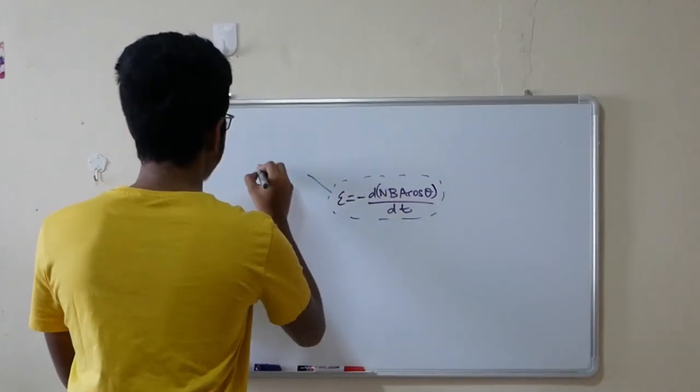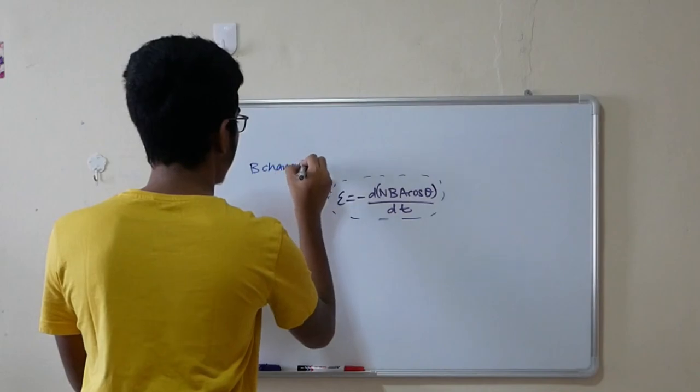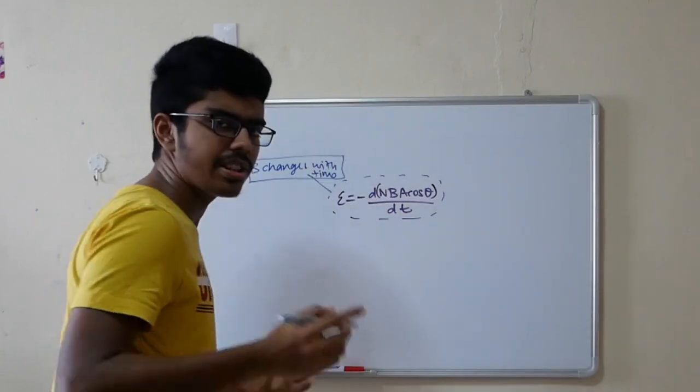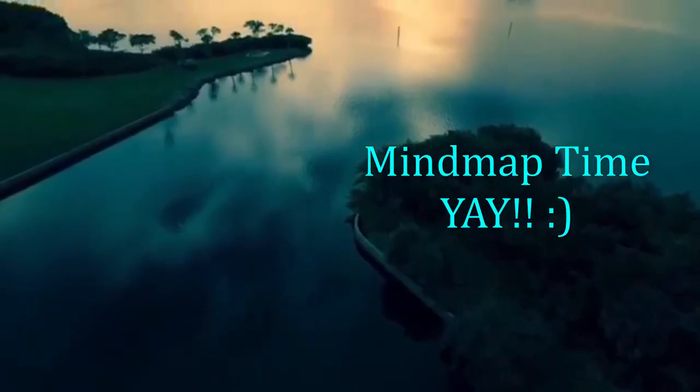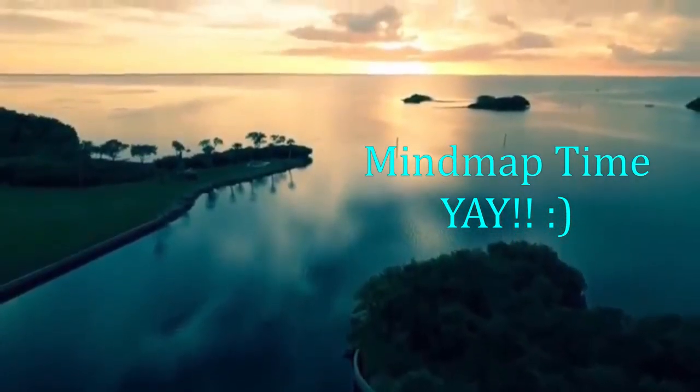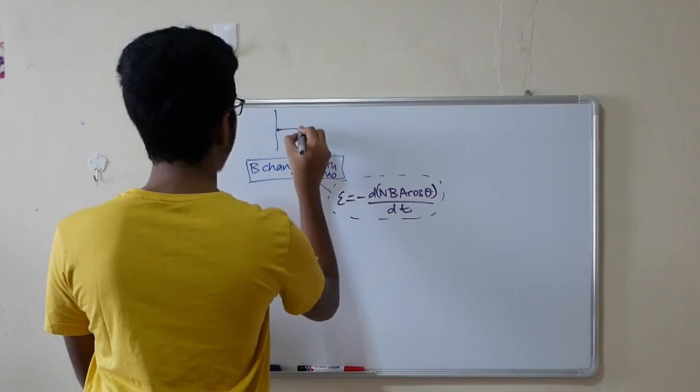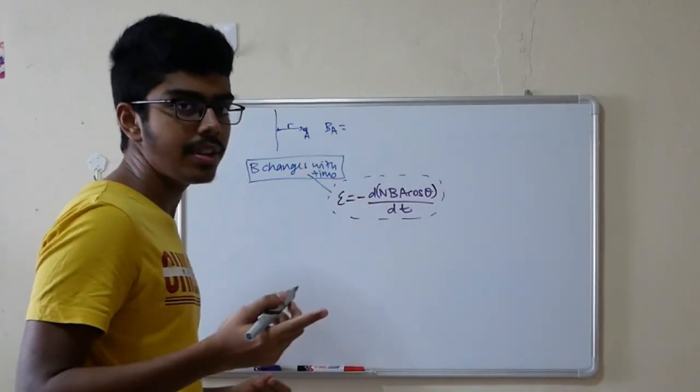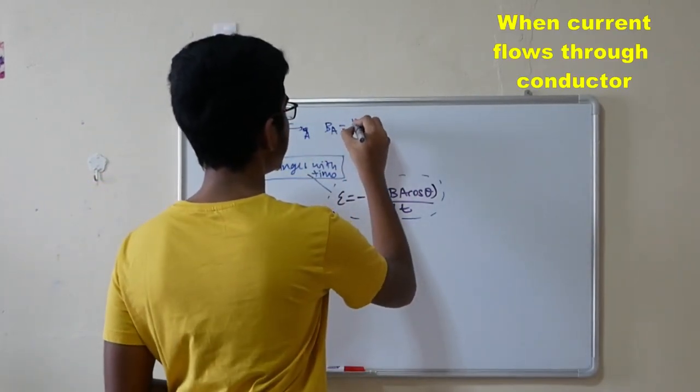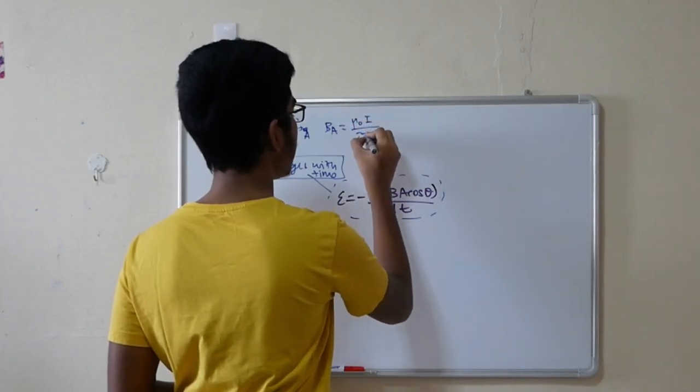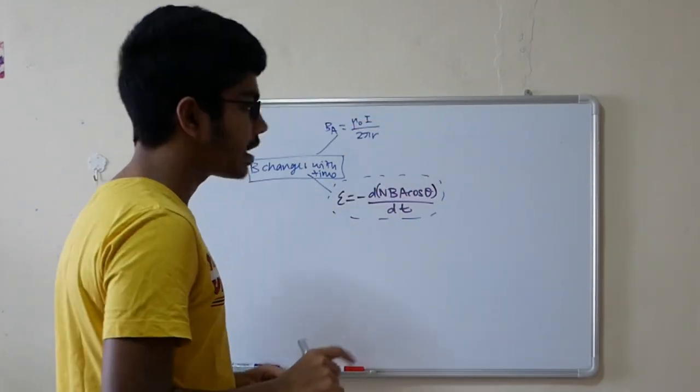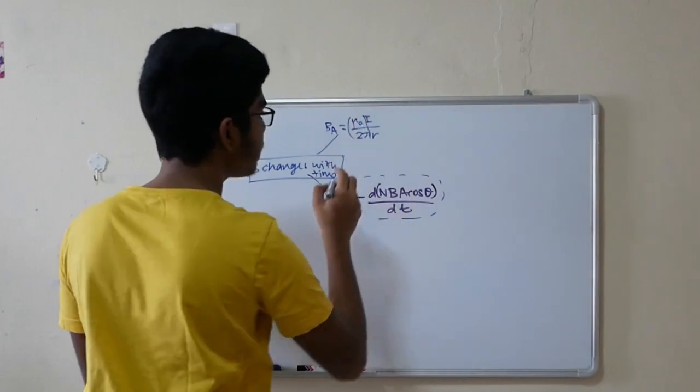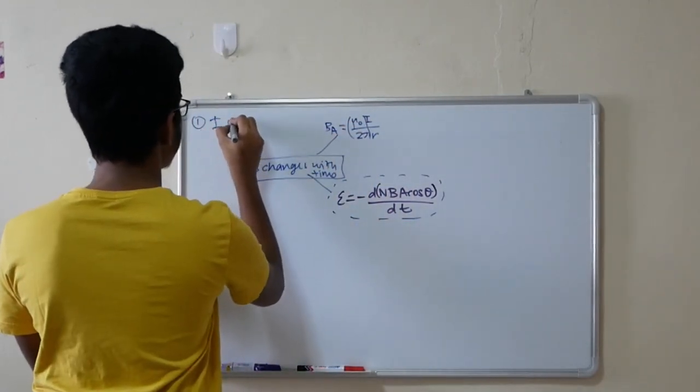Now I'm bringing you through the different scenarios that Cambridge loves to test. The first scenario that Cambridge tests is that B changes with time. How does B change with time? Let's go back to electromagnetism. For a long straight conductor at a distance of R, at this point A, what is the magnetic field value? It is μ₀I over 2πR. So in the question, two things can change. Let's first deal with the fact that everything else is constant. If I only changes...